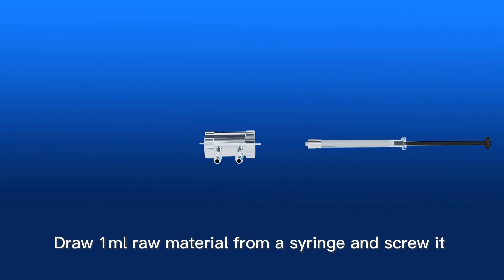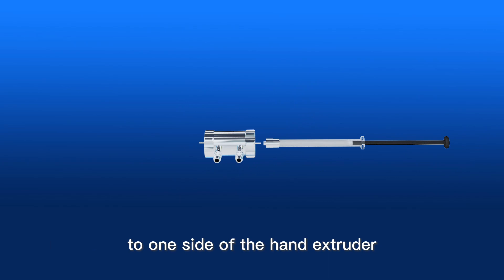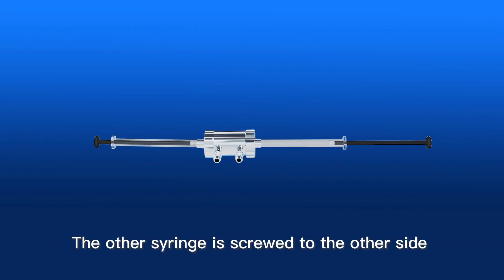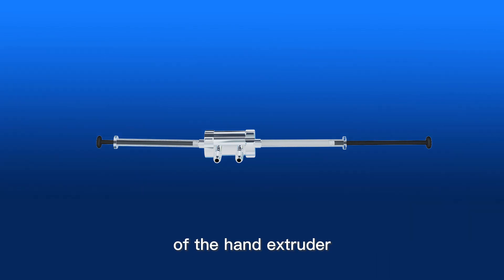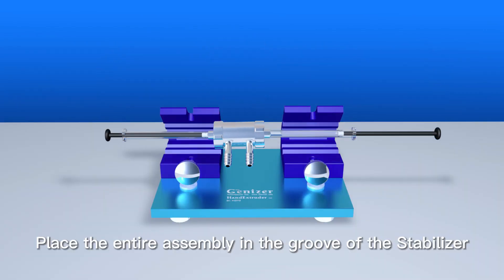Draw 1 milliliter raw material from a syringe and screw it to one side of the hand extruder. The other syringe is screwed to the other side of the hand extruder. Place the entire assembly in the groove of the stabilizer.